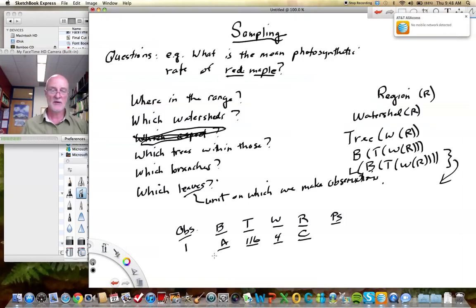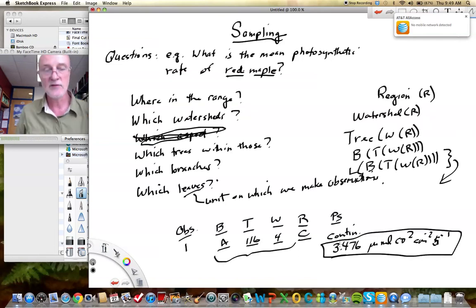Okay. These are all nominal variables. We talked about that in the first video. And then we have a continuous variable. Photosynthetic rate here might be 3.476 micromoles CO2 per centimeter square per second. I don't know. Anyway, I don't know what would be reasonable units. But let's just say we got some value out of our infrared gas analyzer like that.